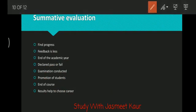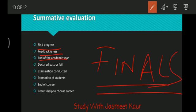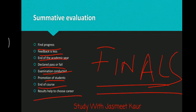Summative assessment finds overall progress and provides feedback at the end of the academic year. It is the final examination — it declares whether a student has passed or failed. It is used for promotion of the student to the next class. It is conducted at the end of the course, and the results can help students choose their next career path.